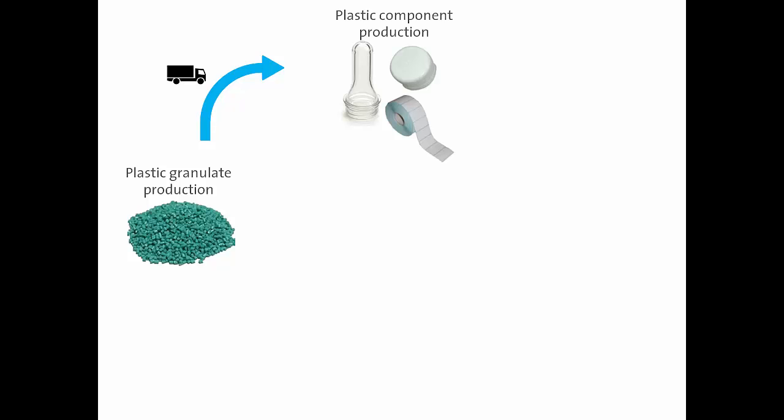So what does the life cycle of a PET bottle look like? It starts out with plastic granulate production — the granulate for the high density polyethylene, the polypropylene, and the polyethylene terephthalate for the plastic components is first produced. Then it is transported and the components themselves are produced: this is what's called a PET preform, the lid, and the label.